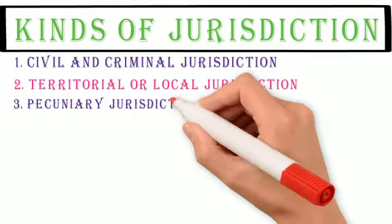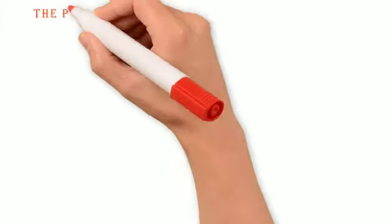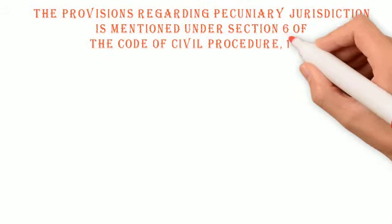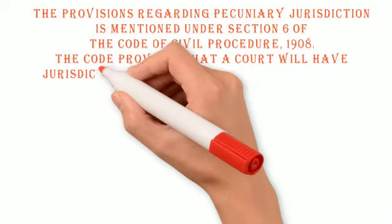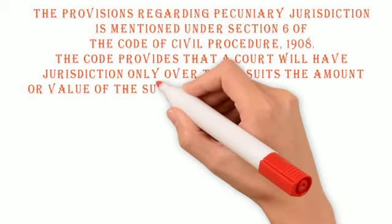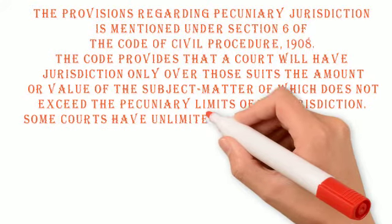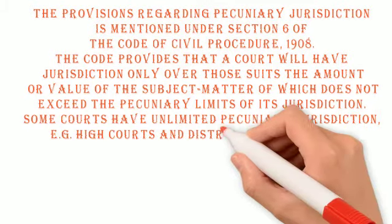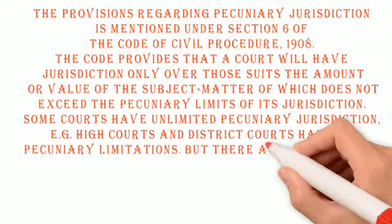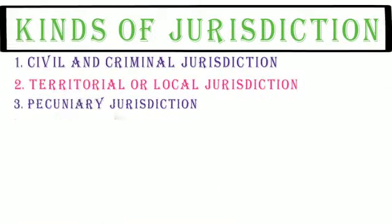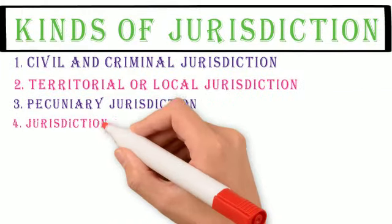3. Pecuniary Jurisdiction: The provisions regarding pecuniary jurisdiction are mentioned under Section 6 of the Code of Civil Procedure 1908. A court will have jurisdiction only over those suits the amount or value of the subject matter of which does not exceed the pecuniary limits of its jurisdiction. Some courts have unlimited pecuniary jurisdiction — for example, High Courts and District Courts have no pecuniary limitations. But other courts have jurisdiction to try suits only up to a particular amount; thus, a Presidency Small Causes Court cannot entertain a suit in which the amount claimed exceeds Rs. 1000.